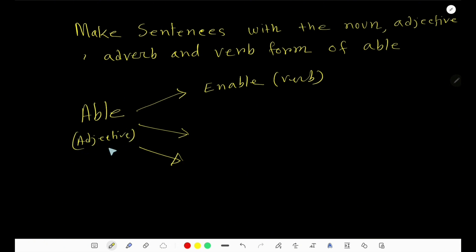To change adjective to verb in case of able, you need to just add 'en' before able.